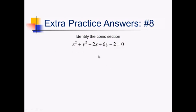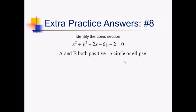On this problem, I've got two squared variables, so it's not a parabola. They both have the same sign — A and B are both positive — so that means I either have a circle or an ellipse. And since the coefficients of x and y squared, A and B, are both one, they're both the same. That means this must be a circle.